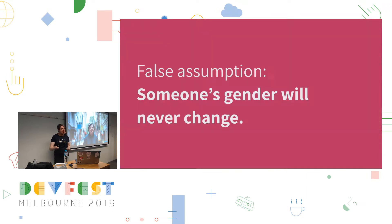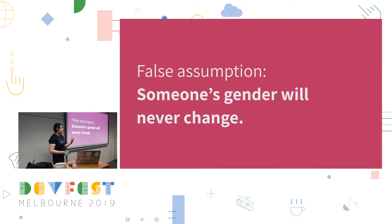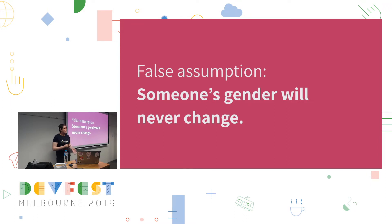That's a false assumption right there — the false assumption that someone's gender will never change. As someone whose gender, or at least perceived gender, did change, it was actually pretty frustrating to run into all these systems where this assumption was built in. Luckily, this didn't include Facebook. I used Facebook a fair bit, and I still do.